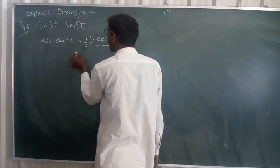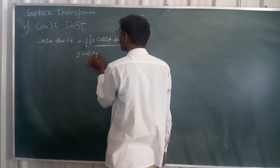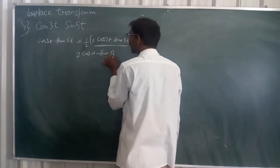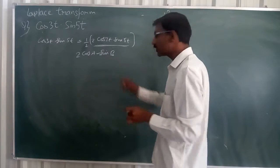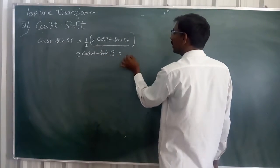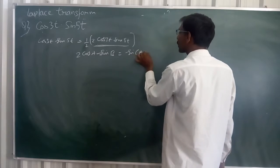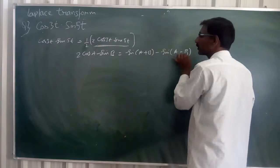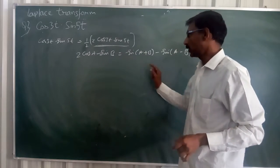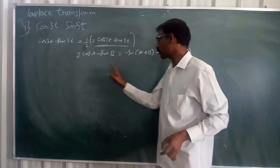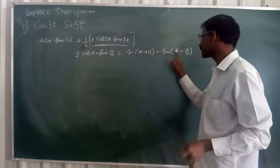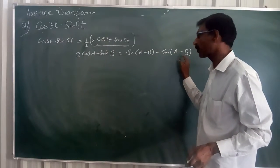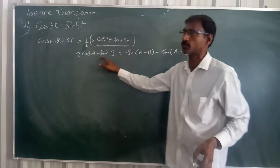This is equals to sine a plus b minus sine a minus b. This is one formula: 2 cos a sine b is nothing but sine a plus b minus sine a minus b. When we simplify this one we get this one.